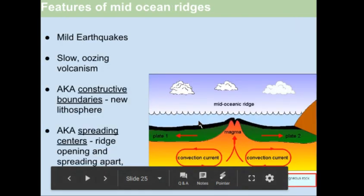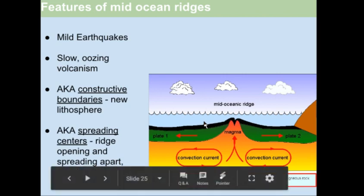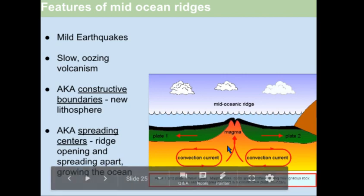Mid-ocean ridges are characterized by medium-sized earthquakes that follow the axis of the ridge, and by the slow-oozing volcanism that's making the new ocean plate. These are constructive boundaries, meaning they are creating plate, as opposed to destructive boundaries, which are convergent boundaries, where you have things like subduction going on, that essentially recycle the plate back into the mantle.